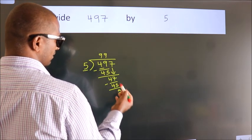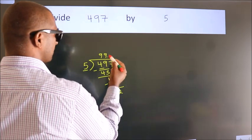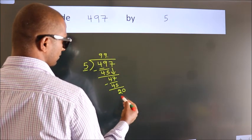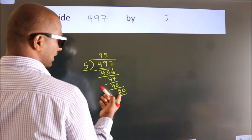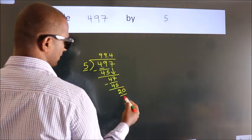After this, no more numbers to bring down. So what we do is we put a dot and take 0. So 20. When do we get 20 in the 5 table? 5 fours, 20.